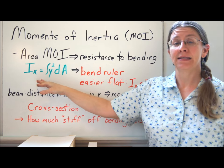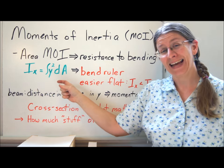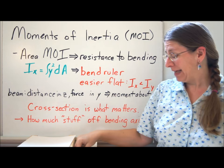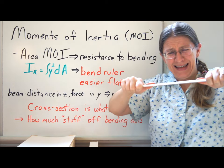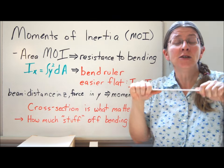The area moment of inertia is defined as the integral of y squared dA. So it answers the question, if you have a ruler, why is it easier to bend it this way than to bend it width-wise? It's easier to bend it flat.